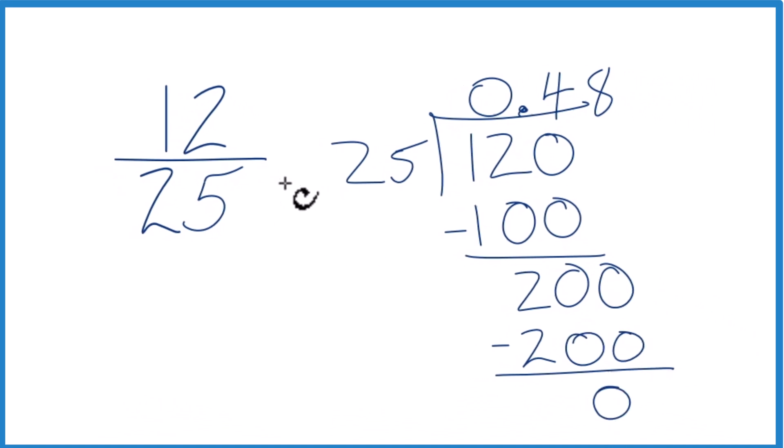So in answer to our question, when we change the fraction 12/25 to a decimal, we divide 12 by 25, we get 0.48. That's our decimal.